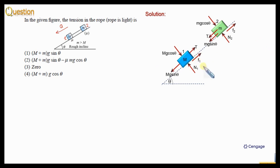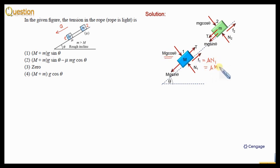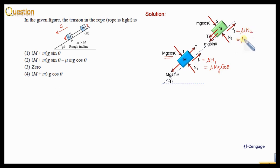Now we can write the values of F1 and F2. F1 is μ multiplied by N1, and N1 is equal to Mg cosθ, so F1 = μMg cosθ. Similarly, F2 = μ multiplied by N2, and N2 = mg cosθ, so F2 = μmg cosθ.